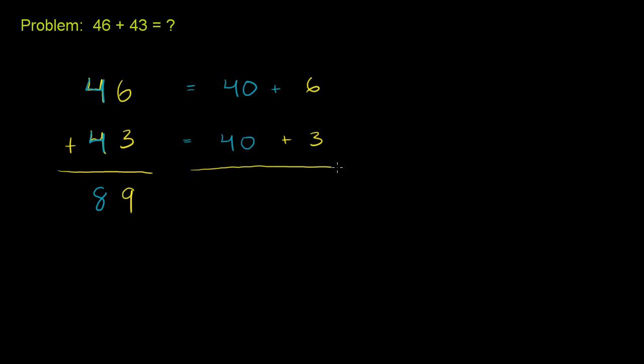And so when you add them, when you add a six plus a three, you get a nine. And when you add a 40 plus a 40, you get an 80. So you get 80 plus nine, which is 89.